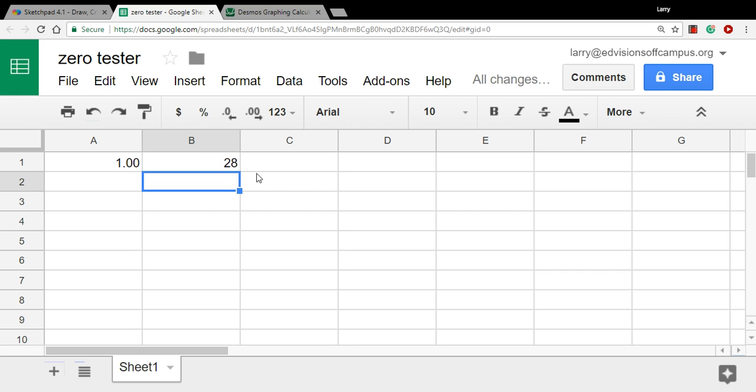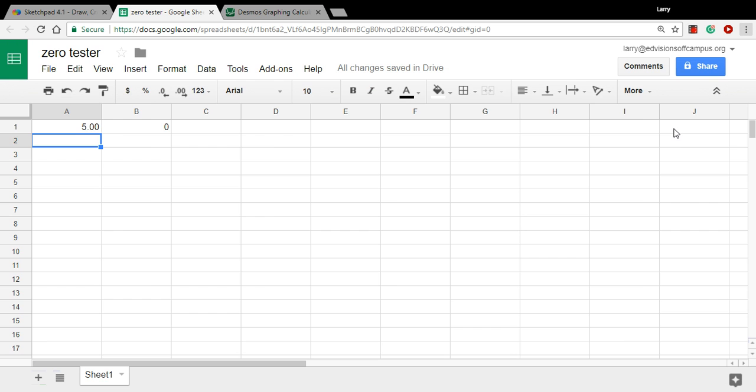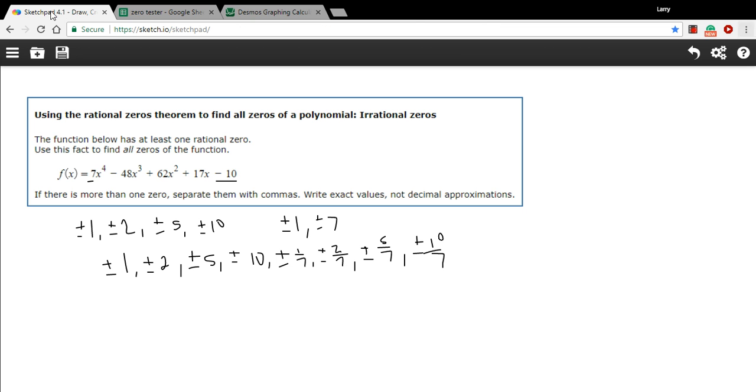So let's start with, well, 1 doesn't work. That gives us 28. Let's try negative 1. Nothing doing. How about negative 2? Nope. How about 2? Aha. So 2 is a 0. Let's hope we find another one soon. Let's go to negative 5 and 5. Ah, 5. So 2 and 5. And that's actually enough. Once we've found two of the 0s, we can use polynomial division.